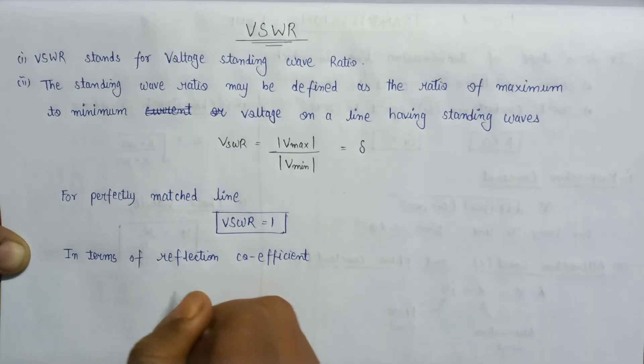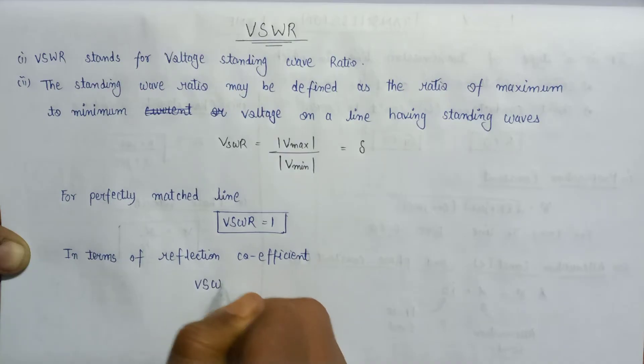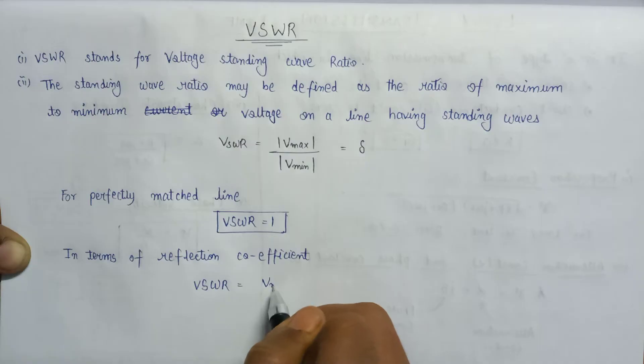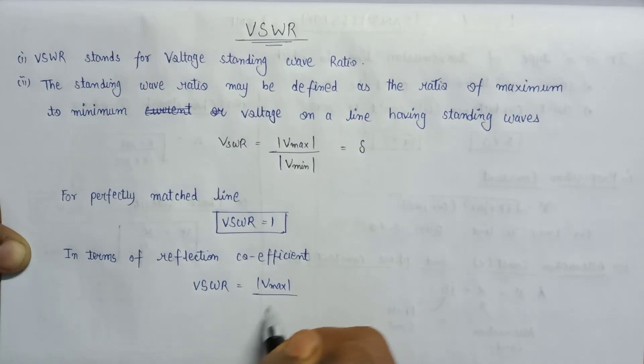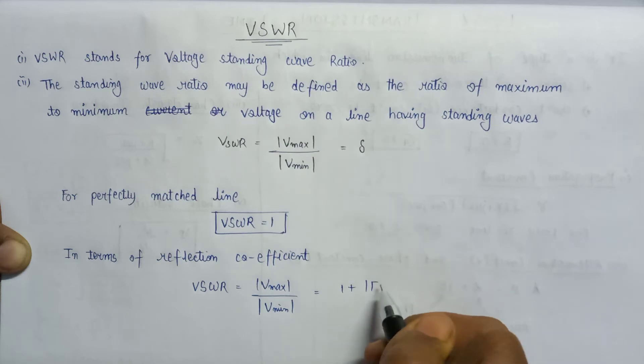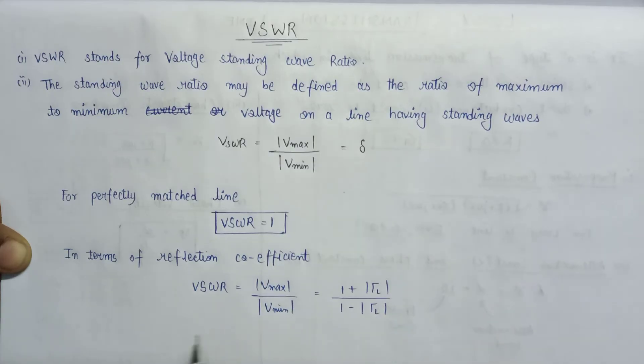That will be equals to one plus mod of reflection coefficient over one minus mod of reflection coefficient. This is the expression for VSWR in terms of reflection coefficient.